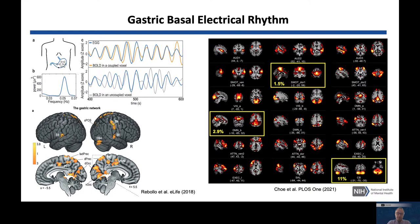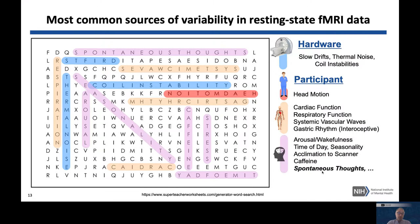That covers physiological noise. The next source of variability is state-level characteristics which, if your goal is to find relationships with trait-level characteristics, become noise. These are things we need to be aware of and try to control or model — for example, when working on developing biomarkers based on fMRI.